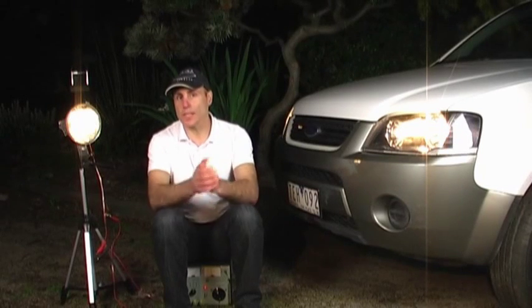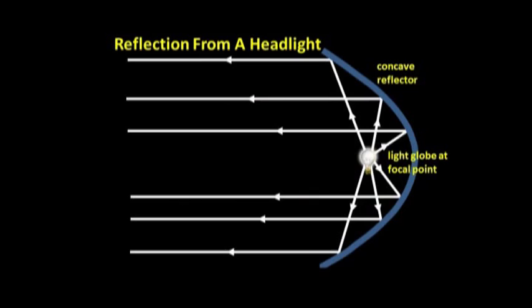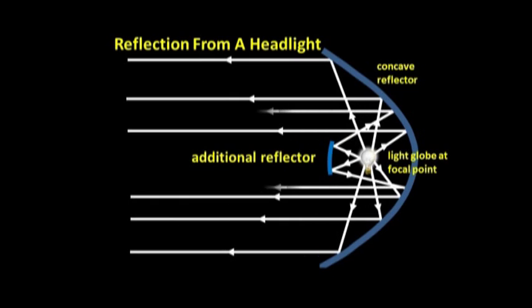But headlights go one step further than torches. To stop forward moving light from spreading out too much, an additional reflector is often used to reflect this light back towards the concave reflector, so that even more light then ends up shining more or less directly forward.